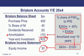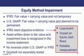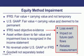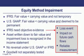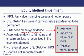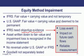Goodwill in associates is no longer amortized — it is subject only to annual impairment review. An impairment occurs when the fair value of the associate has declined below its carrying value and the decline is deemed not temporary (IFRS) or permanent (US GAAP). In practice these thresholds are nearly identical.